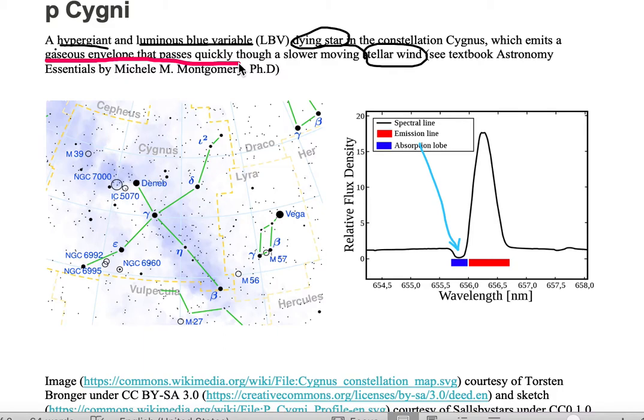So we get what's known as a P. Cygni profile, which is shown on the right. It's a spectrum of P. Cygni. We're looking at a particular line of the spectrum of P. Cygni.